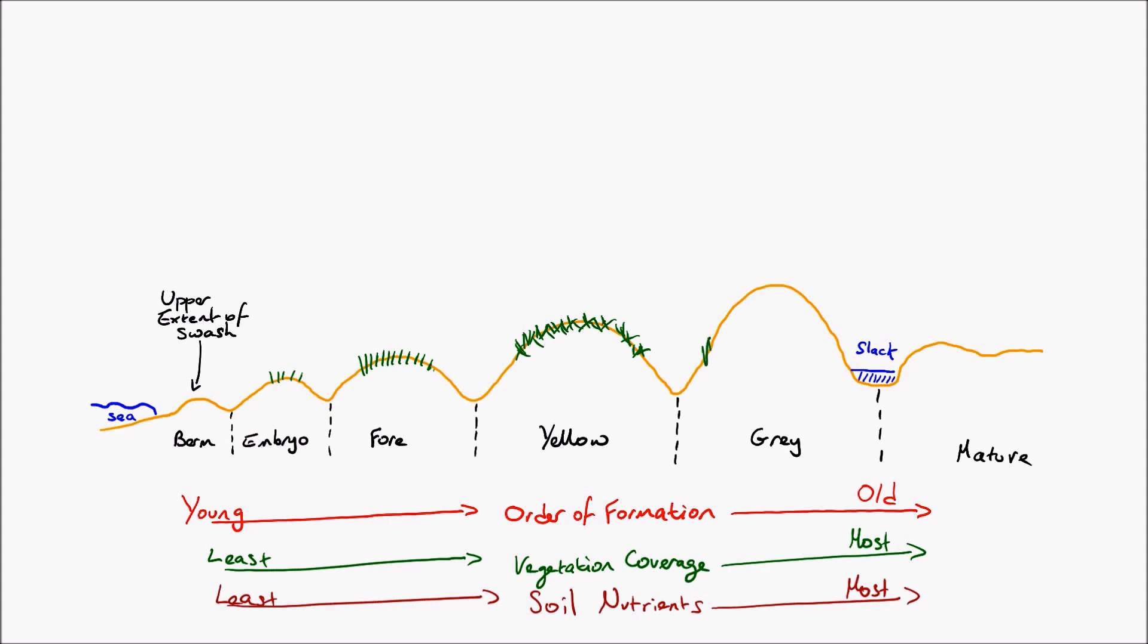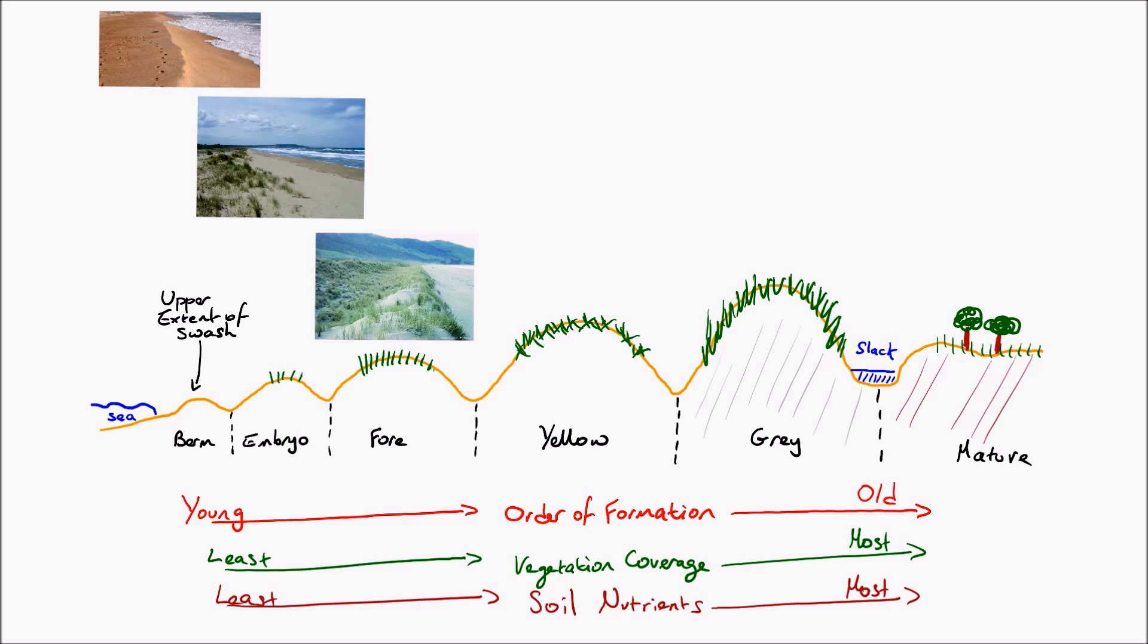They also have increased vegetation coverage which helps them to trap that sediment that we talked about. And because they have more vegetation coverage the color of the dune slightly changes. It goes from a yellow sandy to more nutrient rich gray and then finally a brown soily composition.